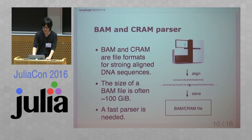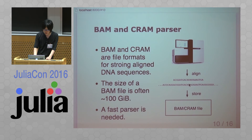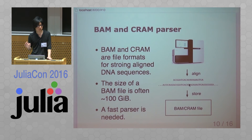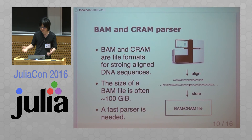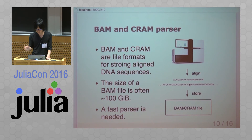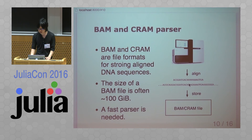The size of a BAM file is often very large — it can be 100 gigabytes — so a fast parser is really needed in practice. The BAM file is in binary format, so parsing is very fast, but it is compressed, so we need to decompress the data using GZIP. Decompressing GZIP files is actually the bottleneck of loading data.